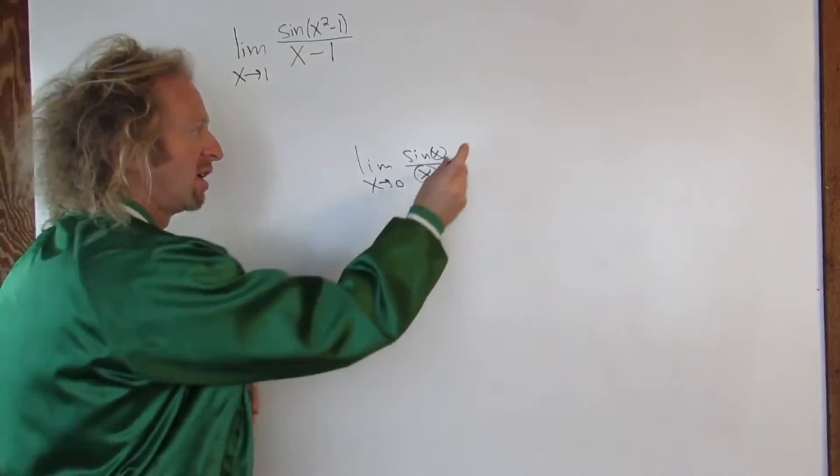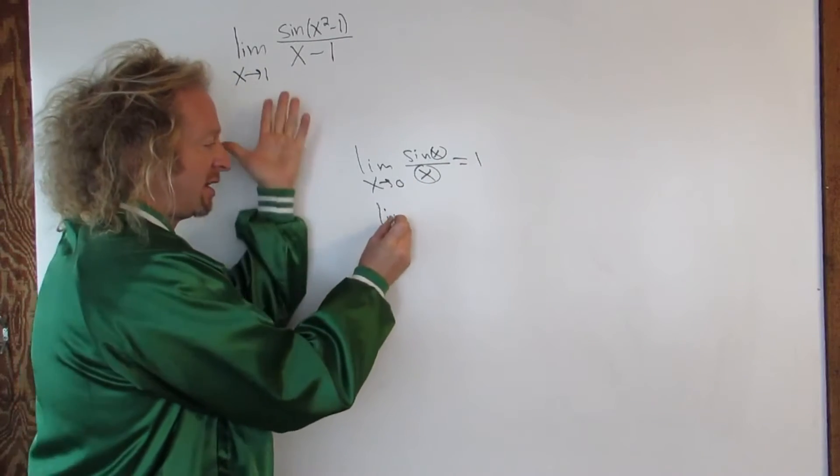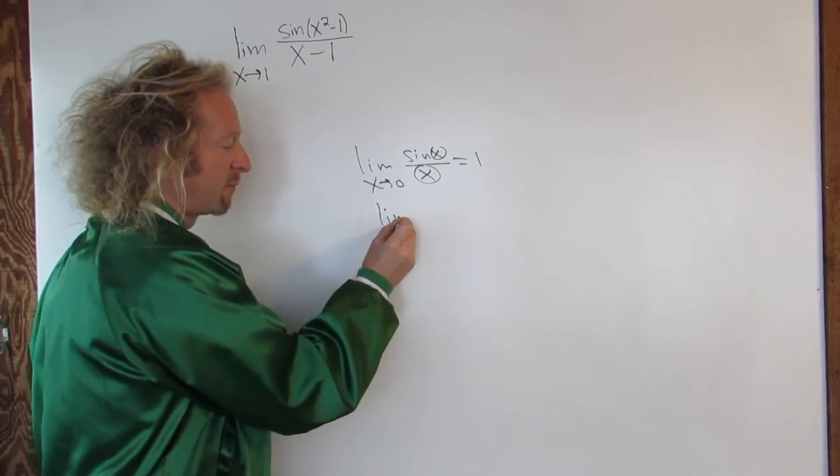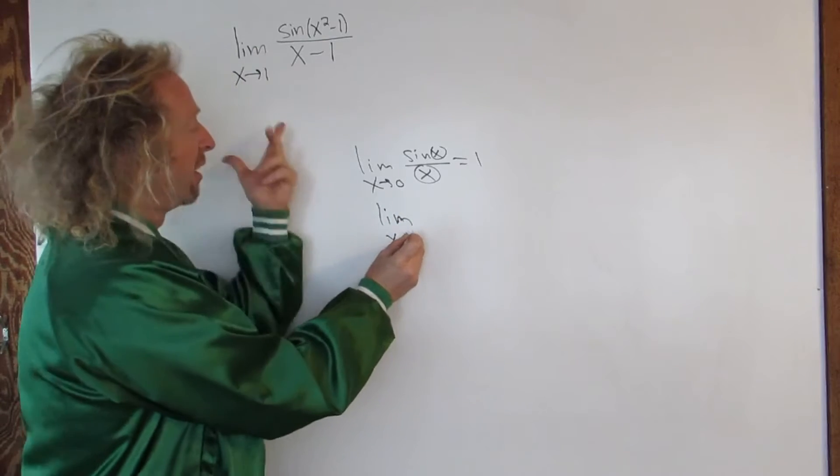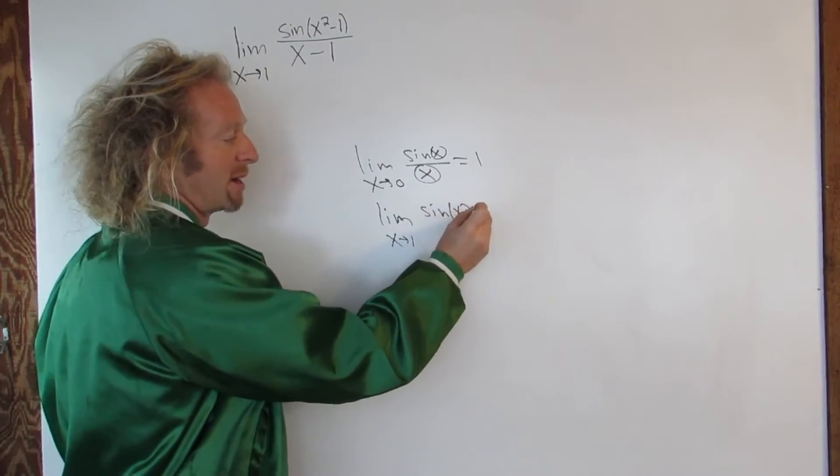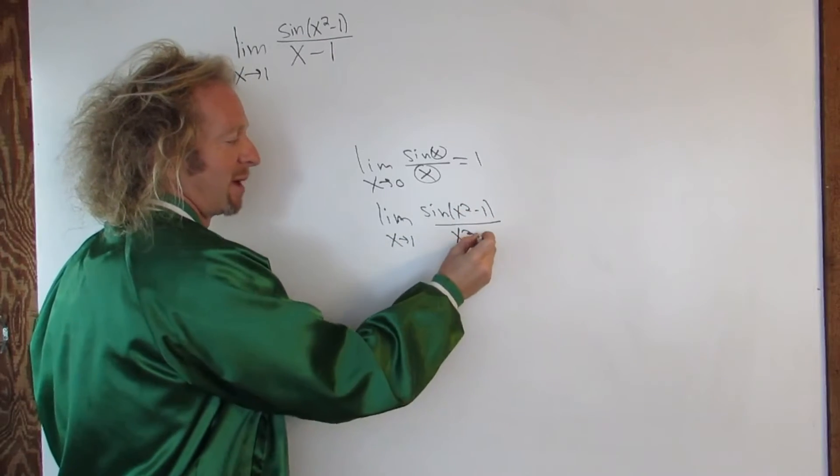So for example, if we had, in this case here, say we had limit x approaches 1 of sine x squared minus 1 over x squared minus 1.